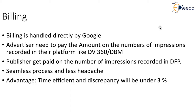How does billing happen? Billing is handled directly by Google. The advertisers will pay according to the impressions recorded in their DV360 UI or any other platform in which they are hosting the creatives. The publishers will get paid by Google based on the number of impressions recorded in DFP. The amount will be deducted from the advertiser automatically and credited to the publisher's account automatically.